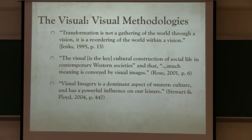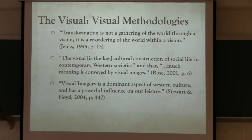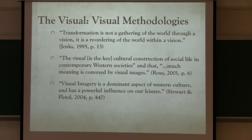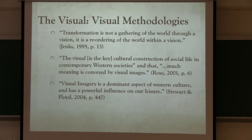So what are visual methodologies? These are three ways in which we can look at the theory behind collecting these types of methods. One: transformation is not gathering in the world through a vision — it is the reordering of the world within a vision. The whole idea is that the visual sets the stage on determining places, placement of people, placement of things. We describe things visually, even if we are sightless, we still describe things in a visual sense.